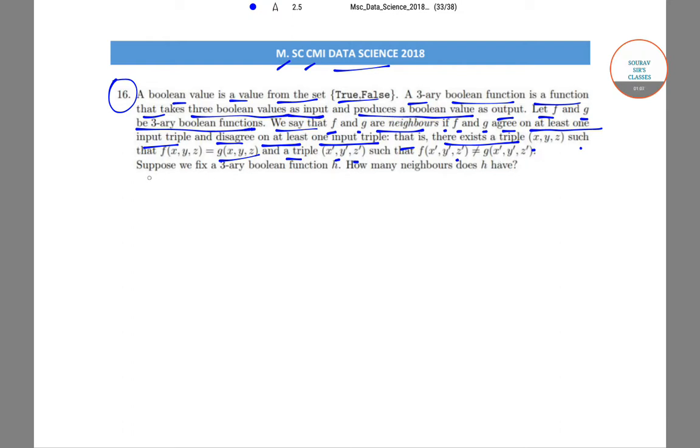Now suppose we fix a 3-ary boolean function h. How many neighbors does h have? So this is the question that we're looking for.